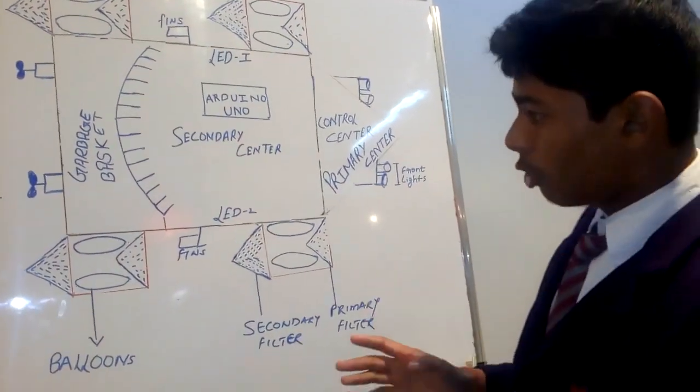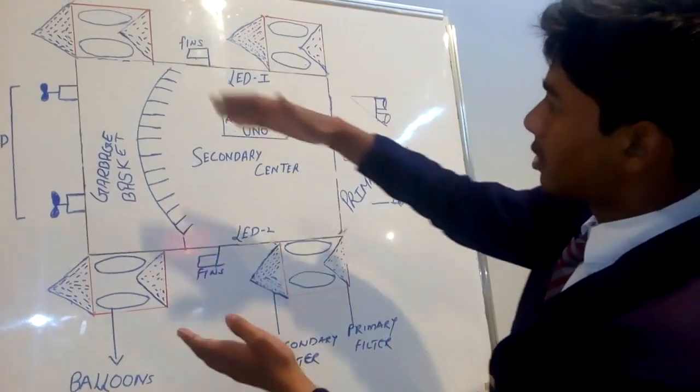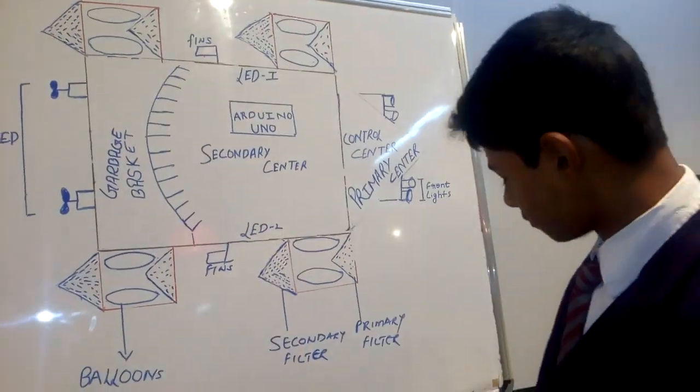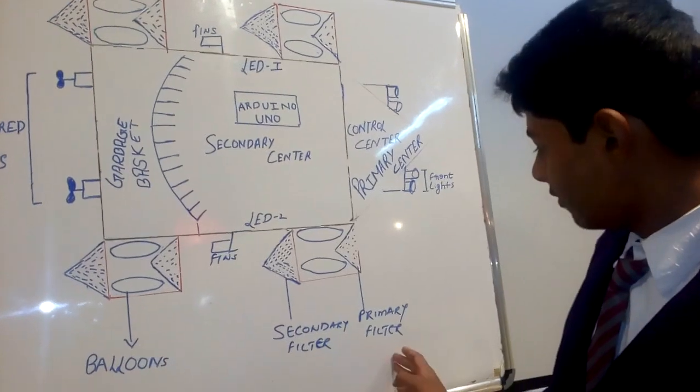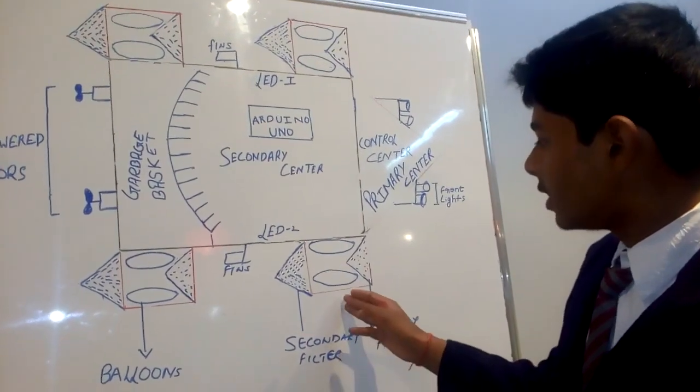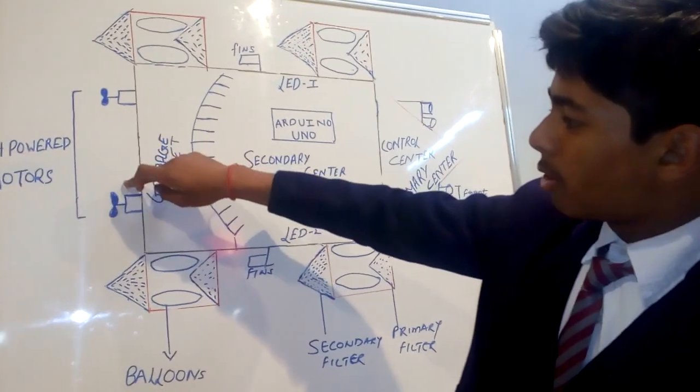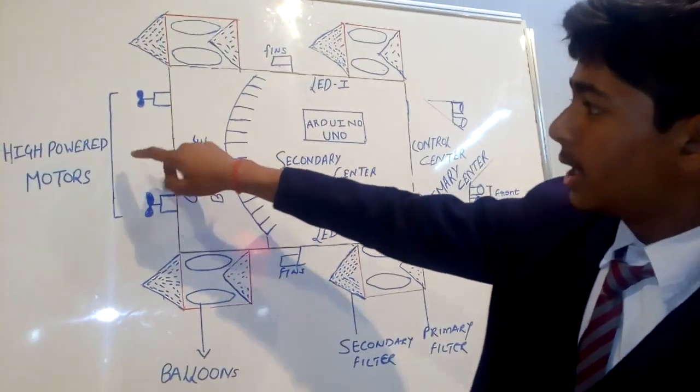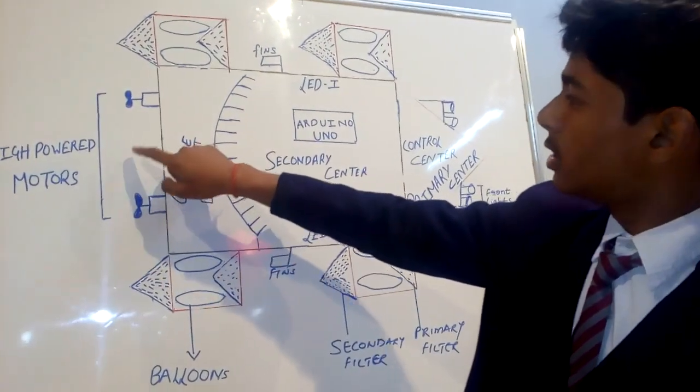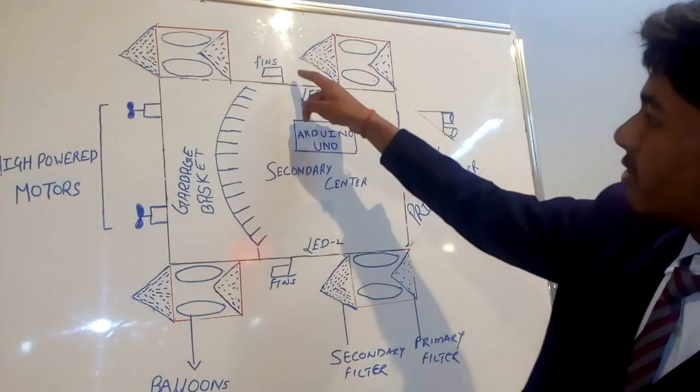It also has four hollow boxes at the corners of this board which have primary filter and secondary filter. It is also fitted with a high powered motor which is of 9 volts at the end, which will accelerate the power of this board, and the fins which will help it to turn.